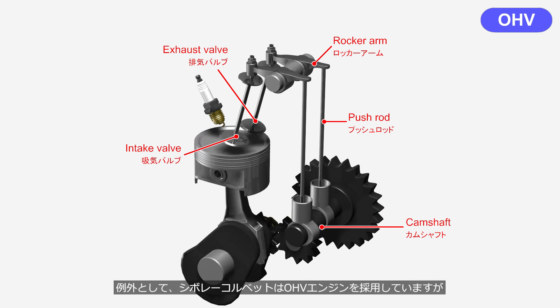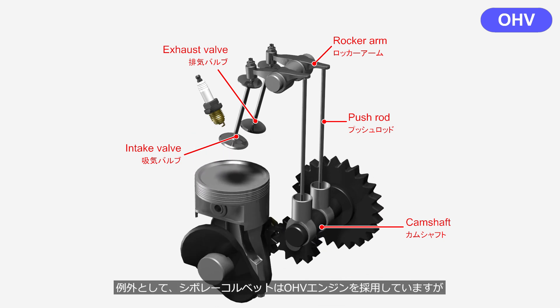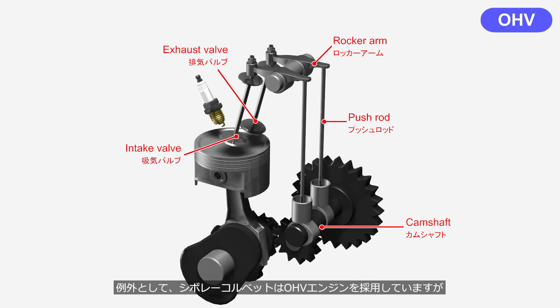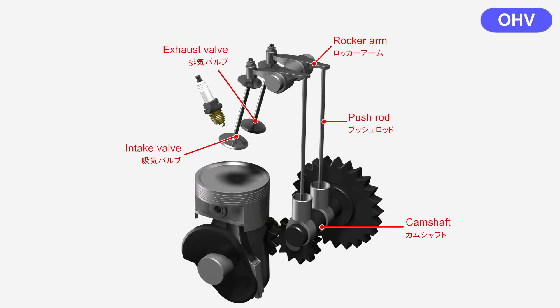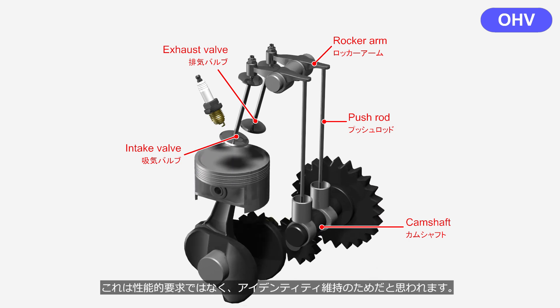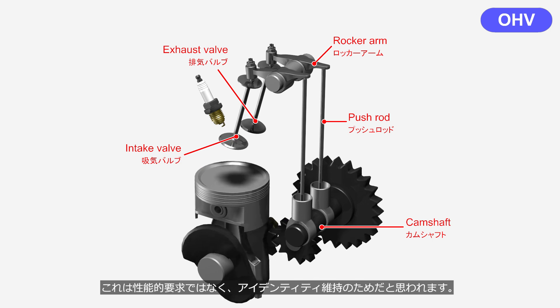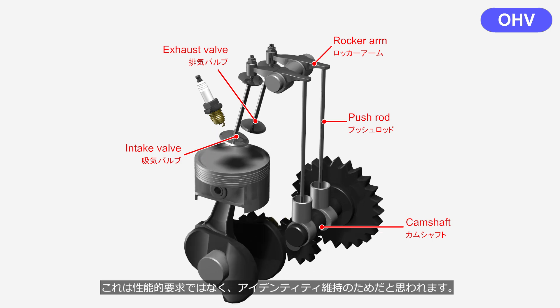As an exception, the Chevrolet Corvette uses an OHV engine. But this is believed to be for maintaining its identity, rather than for performance reasons.